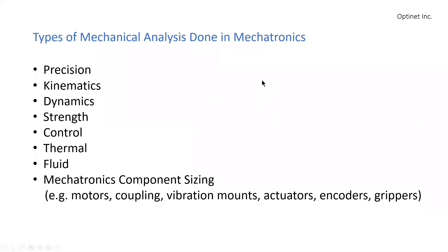The types of analysis which are typically done when you design a mechanical system include precision, kinematics, dynamics, strength, control, and thermal fluids.